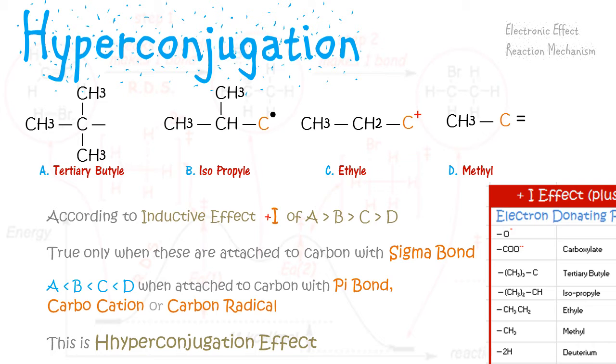We find that tertiary butyl is less strong than isopropyl, which is less strong than ethyl, which is less strong than methyl. And this effect is called hyperconjugation effect.